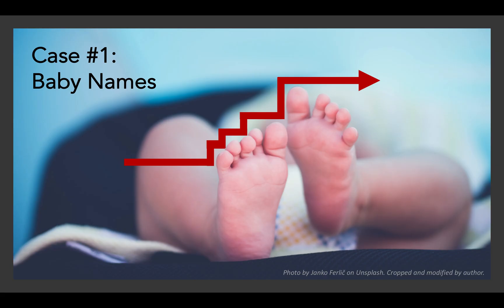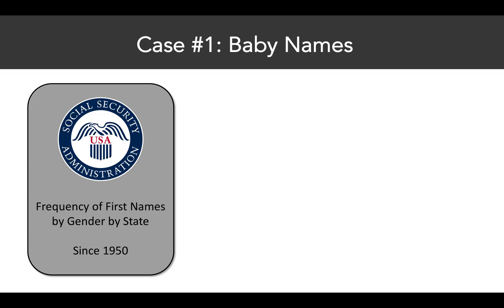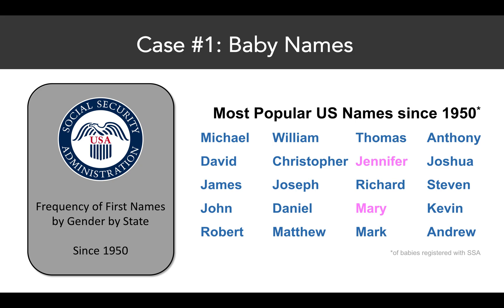So let's first talk about baby names. The data I'll be studying comes from the Social Security Administration, and basically we have the frequency of first names given to babies for each year, by gender and by state. I'll be looking at data from 1950 onward. When I looked at this data, I first just tallied up all the most popular names by gender, and I found that 18 out of the 20 most popular names since 1950 all refer to male babies.